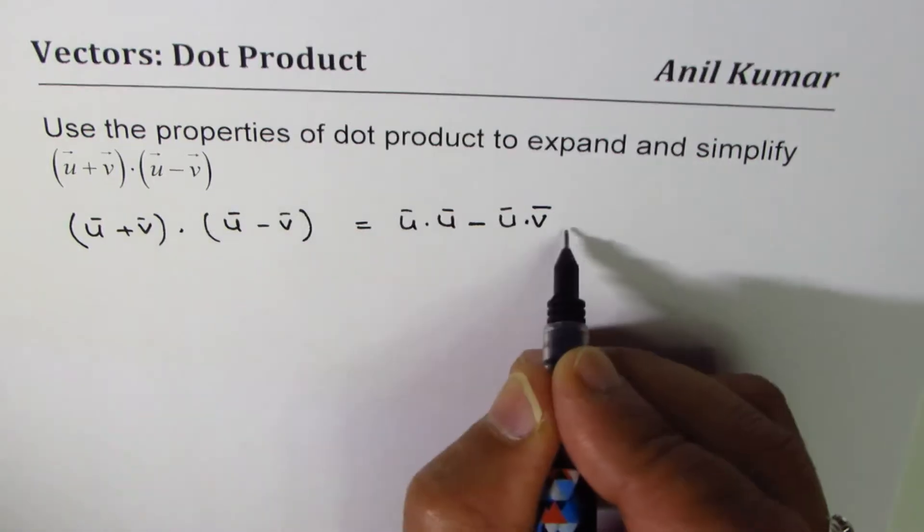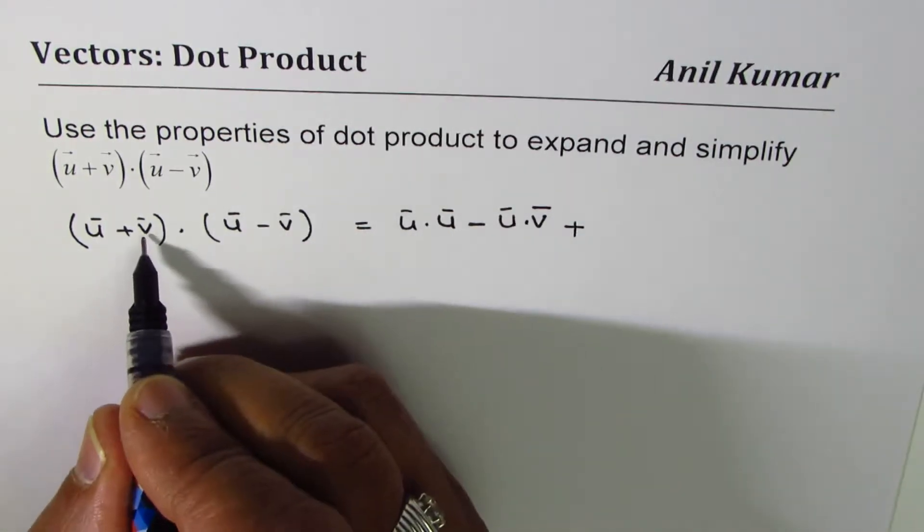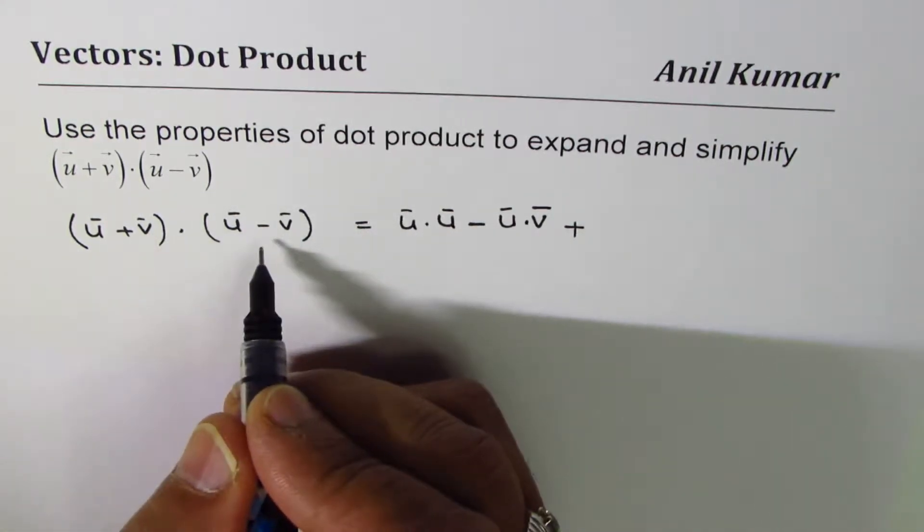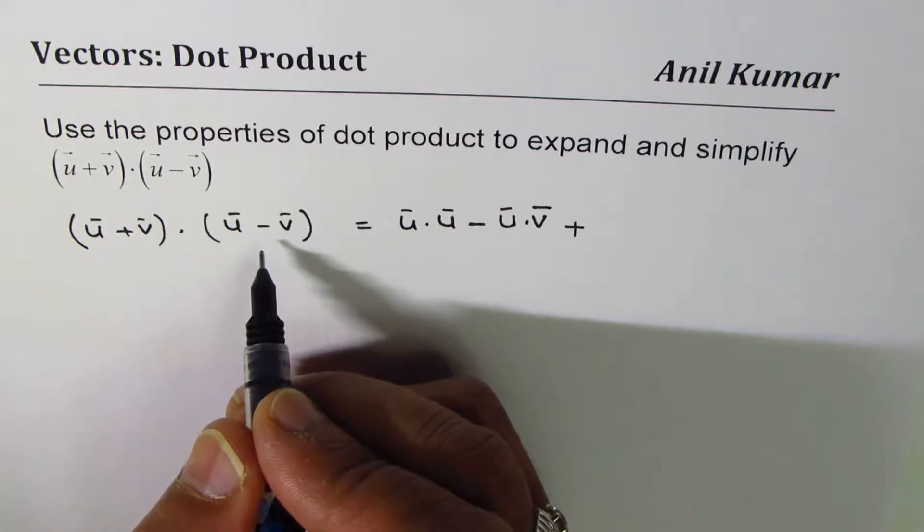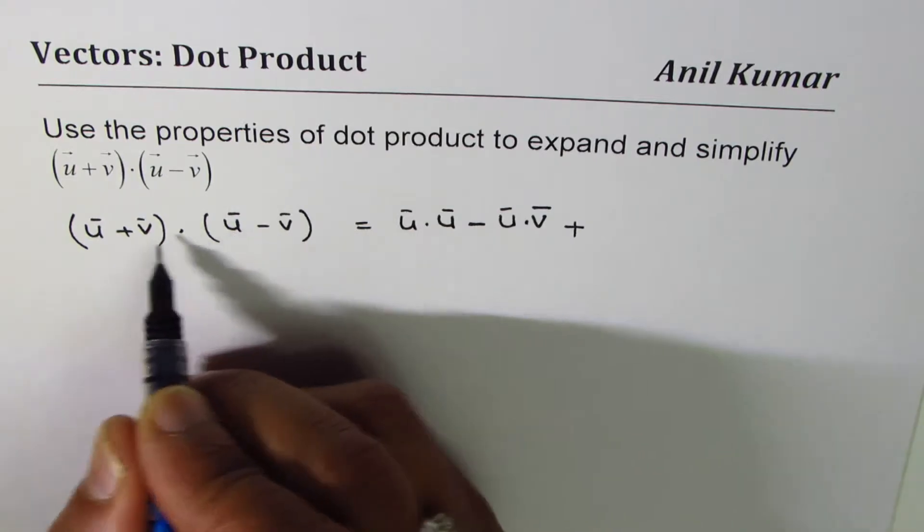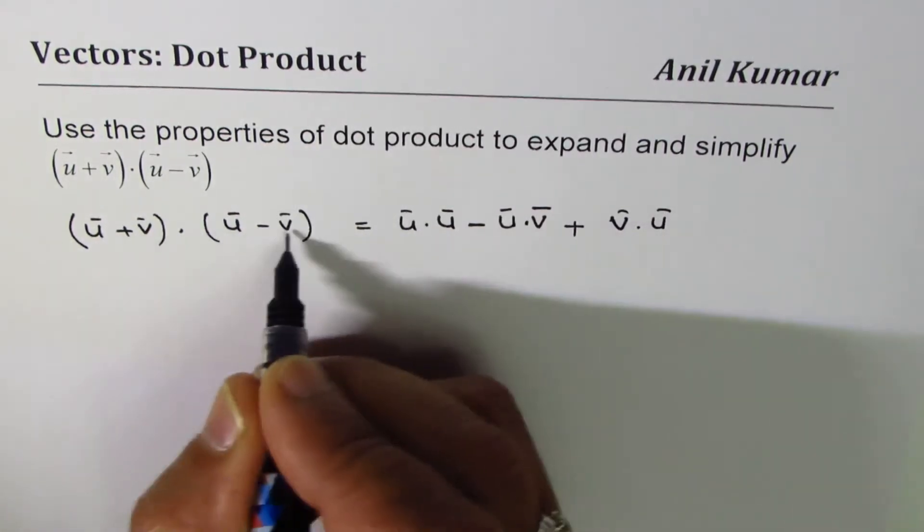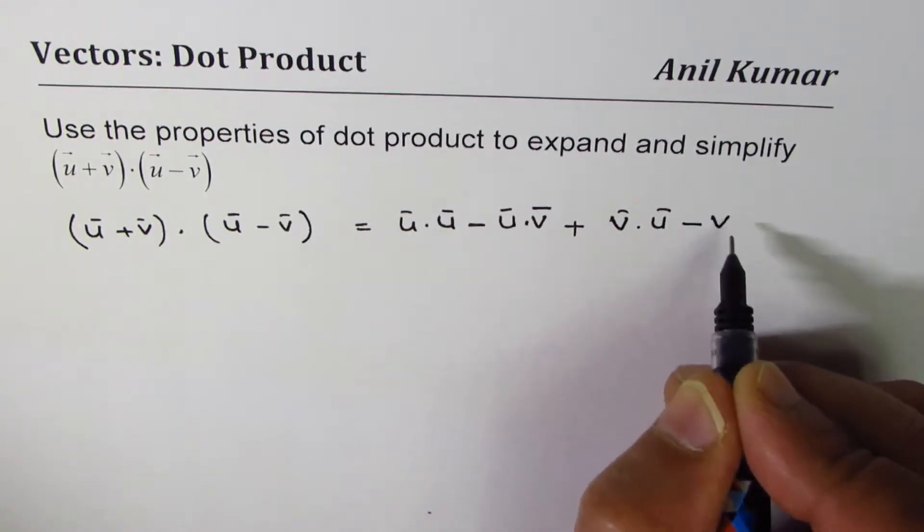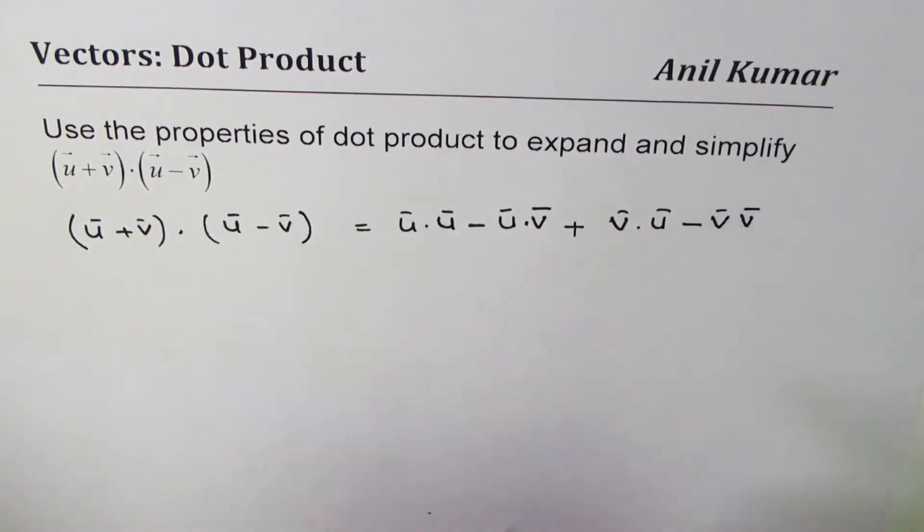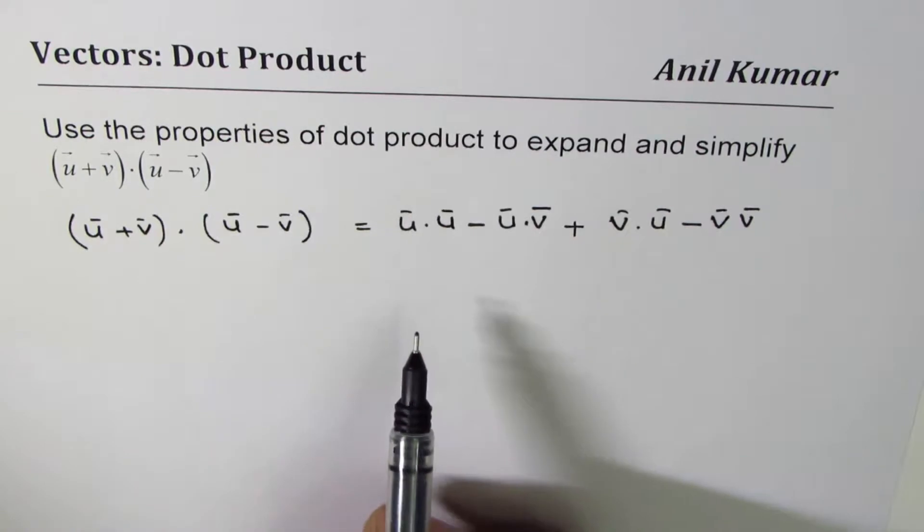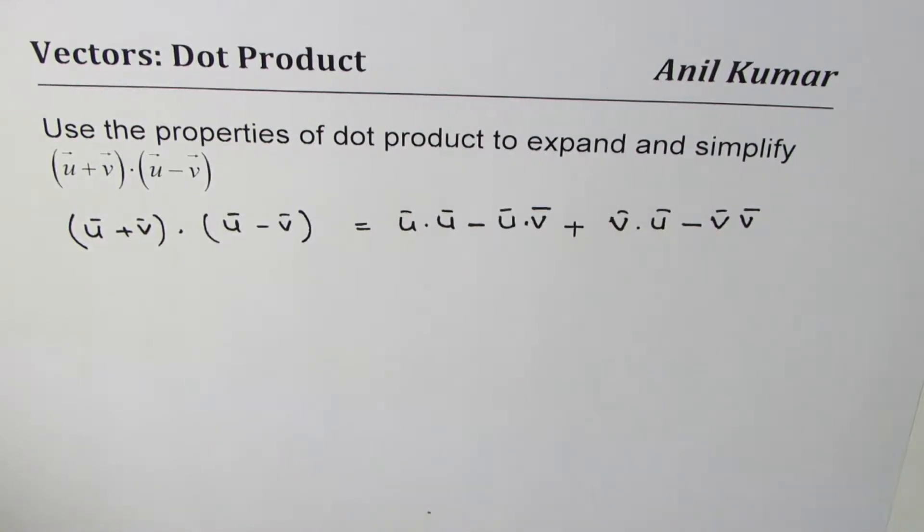Then plus v dot u. So we'll multiply by the other one - that's using the distributive property. So v dot u minus v dot v.